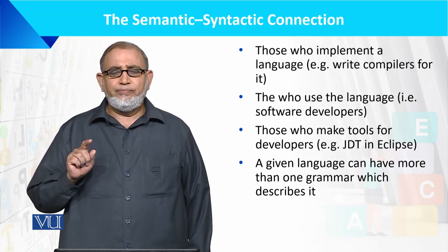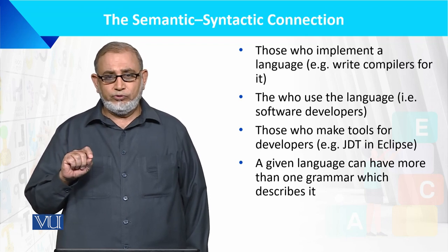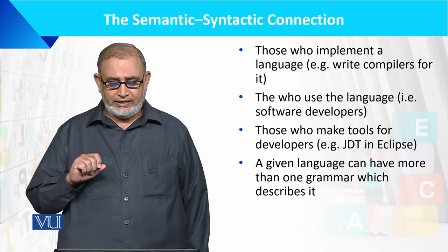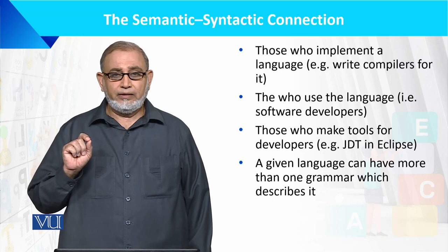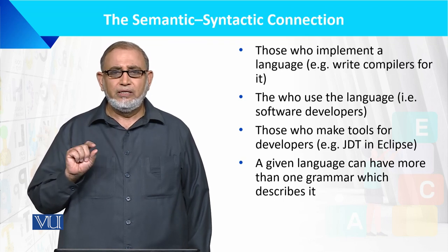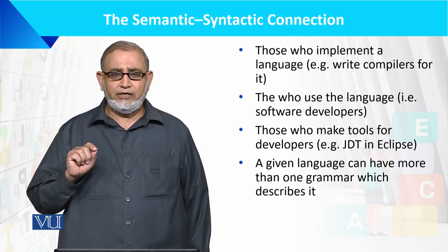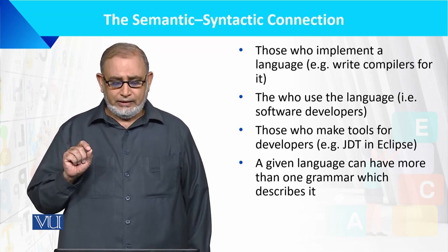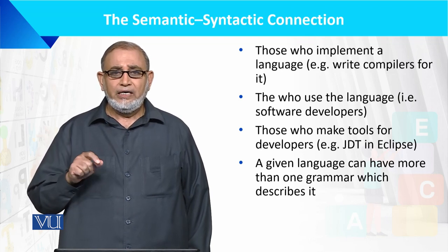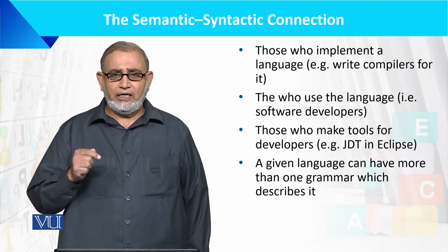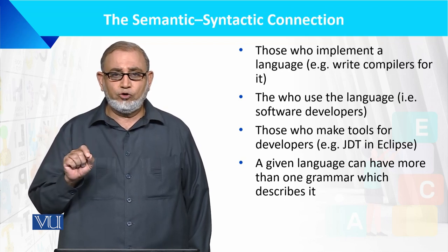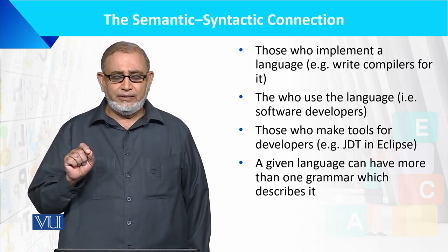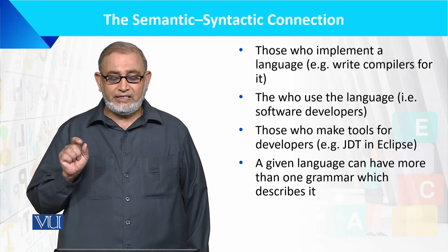یہ ان لوگوں کے لیے بھی جاننا ضروری ہے جو language کو implement، write، یا design کر رہے ہوتے ہیں۔ ایک given language can have more than one grammar۔ Semantics کی سطح پر بھی single words کبھی ایک پورے sentence کے طور پر use ہوتے ہیں — اپنے meaning convey کرتے ہیں جب وہ objects کے name ہوں یا imperative sentences میں verb کے طور پر استعمال ہوں۔